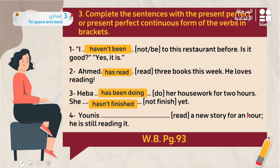'He is still reading it' — still reading right now. He started for an hour and is still reading. Since the action started in the past and is still going on, this is the present perfect continuous: have/has + been + ing. Younis takes 'has', so the answer is: 'He has been reading for an hour.'